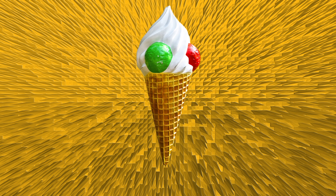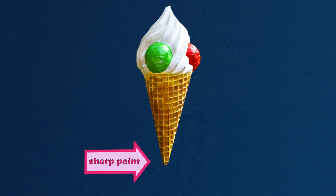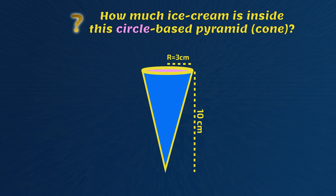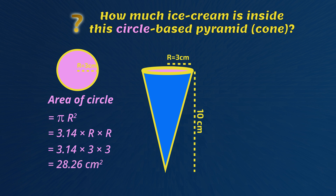The third example is a cone. Did you know that in maths a cone is actually a pyramid? Because it rises to a sharp point just like other pyramids. How much ice cream is inside this circle-based pyramid? First, let's see the base of the cone — it's actually a circle with a radius of 3 centimeters. Now for the rule of the area of the circle: it's pi r squared. Remember that pi is a special Greek letter that's 3.14, and r squared means the radius multiplied by the radius again. So 3.14 times 3 times 3 is 28.26 square centimeters.